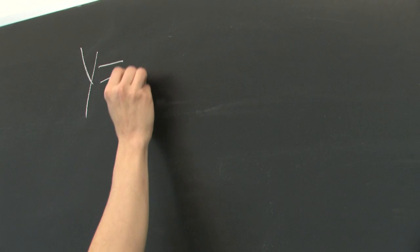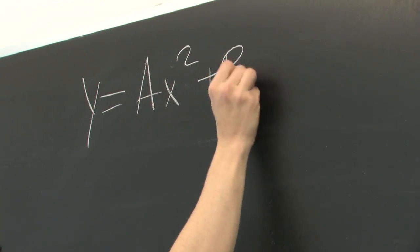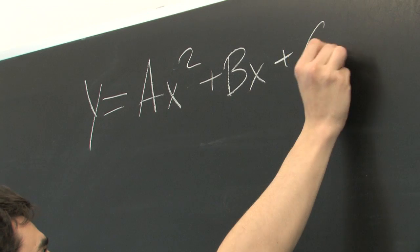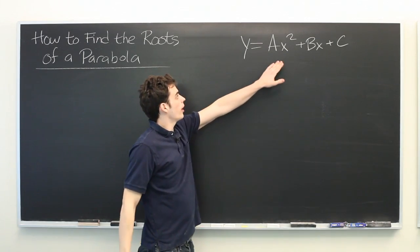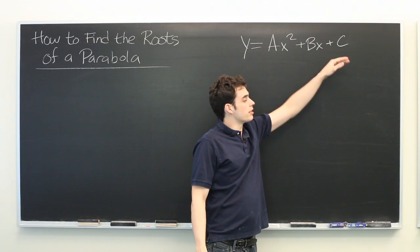Let's say we're looking at a parabola of the form y equals ax squared plus bx plus c, where x is our independent variable as usual, and a, b, and c are constants.